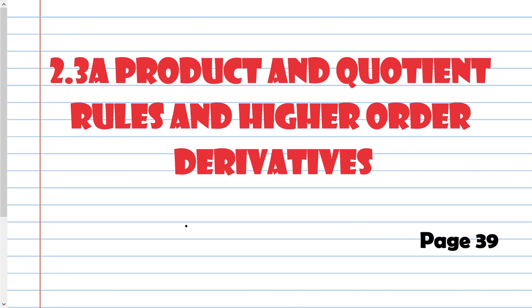2.3a, product and quotient rules and higher order derivatives. Okay, so the product rule. The product is what you get when you multiply two numbers, so it's the answer after multiplication.